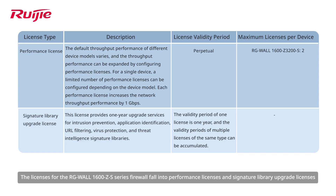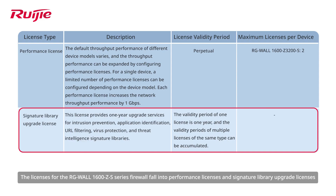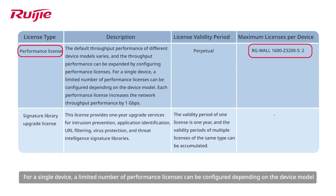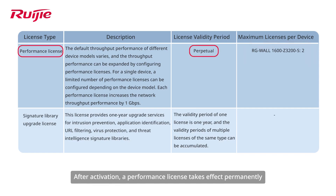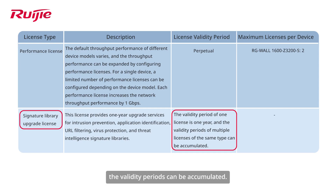The licenses for the RGWALL 1600Z S-Series Firewall fall into performance licenses and signature library upgrade licenses. The default throughput performance of different device models varies, and the throughput performance can be expanded by configuring performance licenses. For a single device, a limited number of performance licenses can be configured depending on the device model. After activation, a performance license takes effect permanently, and the maximum validity period of a signature library upgrade license is one year. If multiple signature library upgrade licenses of the same type are activated, the validity periods can be accumulated.